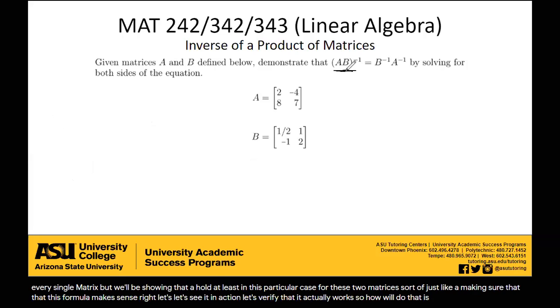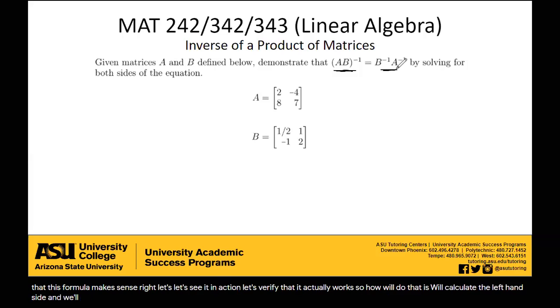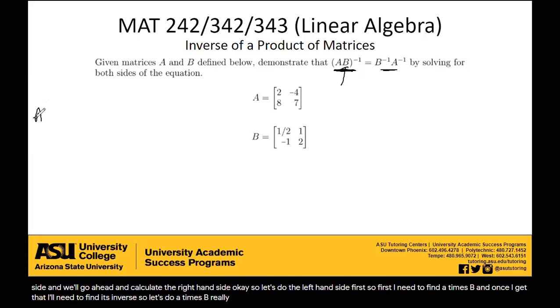So how we'll do that is we'll calculate the left-hand side, and we'll go ahead and calculate the right-hand side. Okay, so let's do the left-hand side first. So first I need to find A times B, and once I get that, I'll need to find its inverse. So let's do A times B really quick.